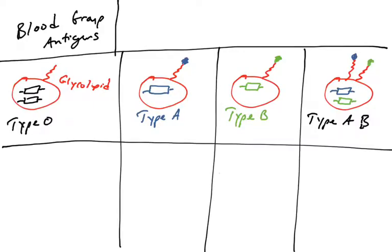Some individuals inherit versions of the genes that do not modify the glycolipid any further than it normally is, and these individuals have type O blood. So those are the four blood types: O, A, B, and AB. Now let's talk about the fact that individuals generate antibodies that bind the type A and type B glycolipids. We call these glycolipids the blood group antigens because they provoke an immune response.